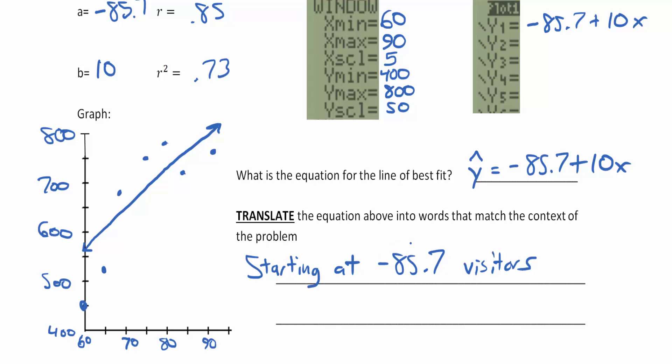I'm going to give you some explanation at the end of why this is negative and why this may not make sense, but it is the correct answer. Starting at negative 85.7 visitors, we add—I think add would be better just because you can see how it matches the equation—we add 10 visitors per degree Fahrenheit.